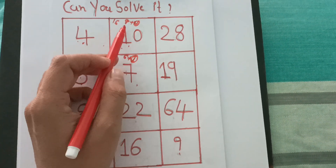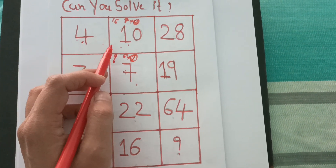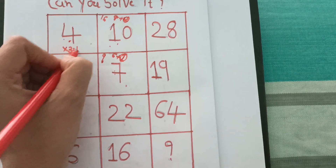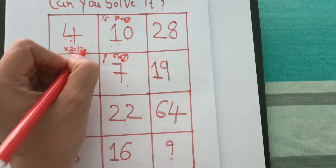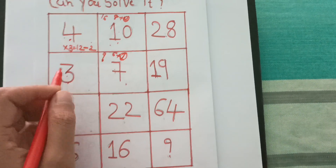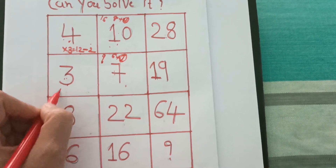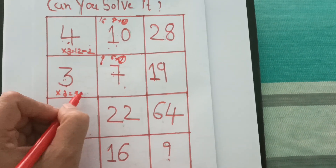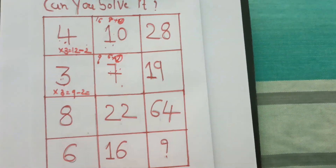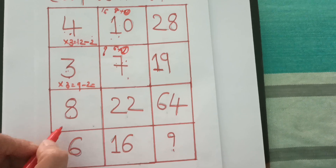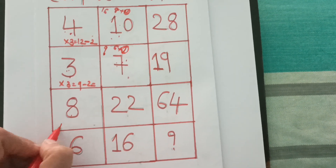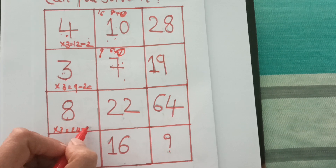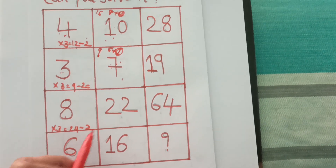So, 4 times 2 is 8. Then 4 times 3 is 12. And 12 minus 2, so we get 10. Here 3 times 3 is 9, and 9 minus 2, so we get 7. Here 8 times 3 is 24, and 24 minus 2, so we get 22.